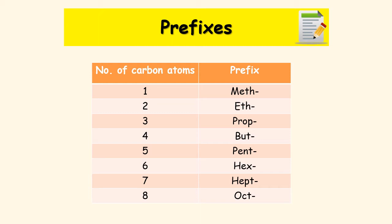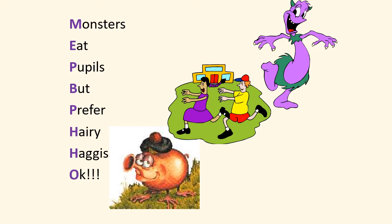The prefixes are: one carbon — meth; two — eth; three — prop; four — but; five — pent; six — hex; seven — hept; eight — oct. One way to remember this is to come up with an acronym, for example: 'monsters eat pupils but prefer hairy haggis' — giving you meth, eth, prop, but, pent, hex, hept, and oct. You can come up with your own acronym for remembering the eight prefixes.